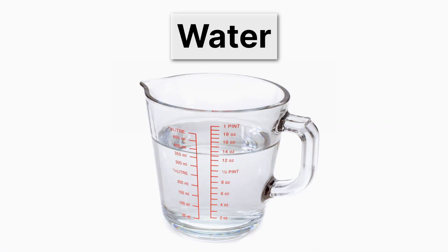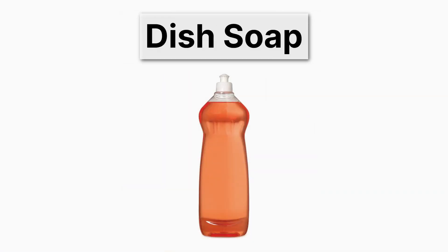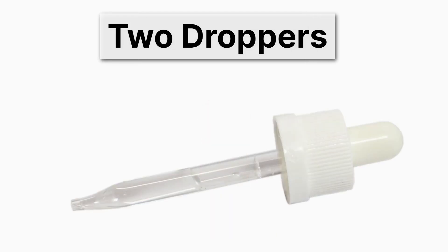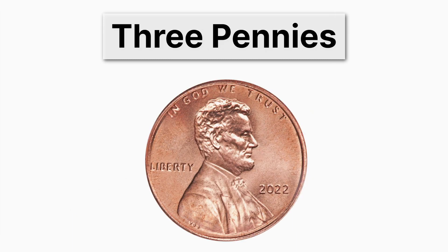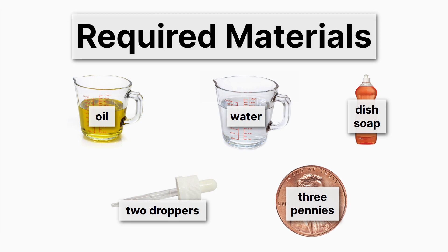You'll need water, cooking oil, and dish soap — just like the soap you would use for washing pots and pans. You'll also need two droppers, so anything that drops liquid, like a turkey baster, anything you can drop one drop at a time out of. If you only have one dropper, that'll probably be just fine. And then three pennies — we're going to be dropping liquids on them, though you could probably get by with just one. If you're ready to get started, you can pause this video and go gather all these materials.